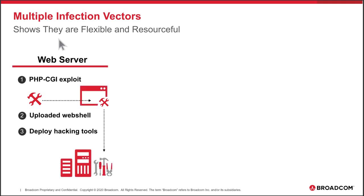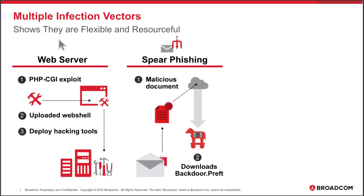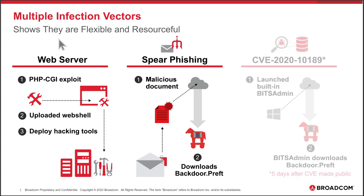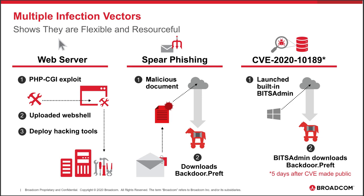When it comes to infection, Stonefly is relatively flexible and resourceful — they don't stick to one way of attacking their targets. We've seen at least three different infection vectors in the past year. The first is web server exploit — we believe they use PHP to upload a webshell and then download hacking tools onto the web server of the target organization. We've also seen spear phishing, which they utilize to download their custom backdoor, Backdoor.Preft. And in 2020, we've seen Stonefly exploit an IT administration software vulnerability.